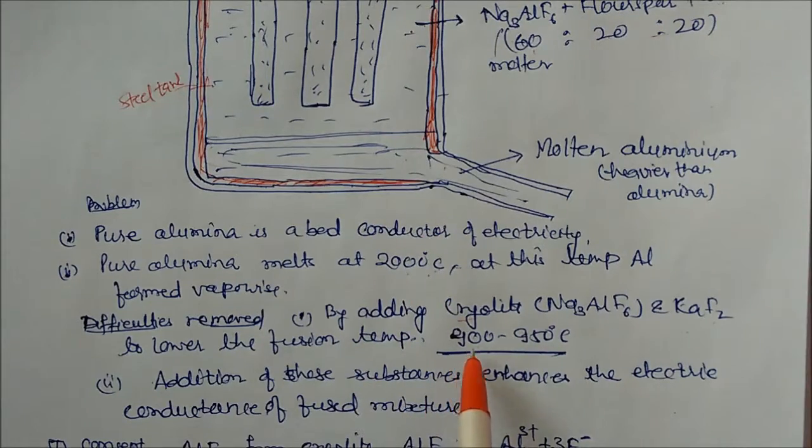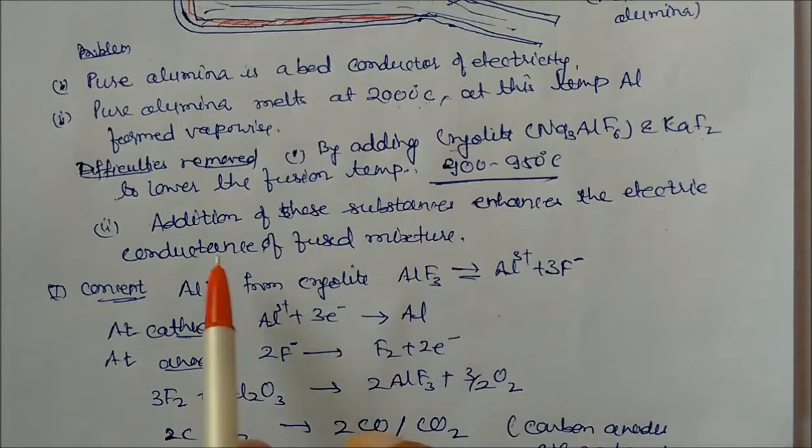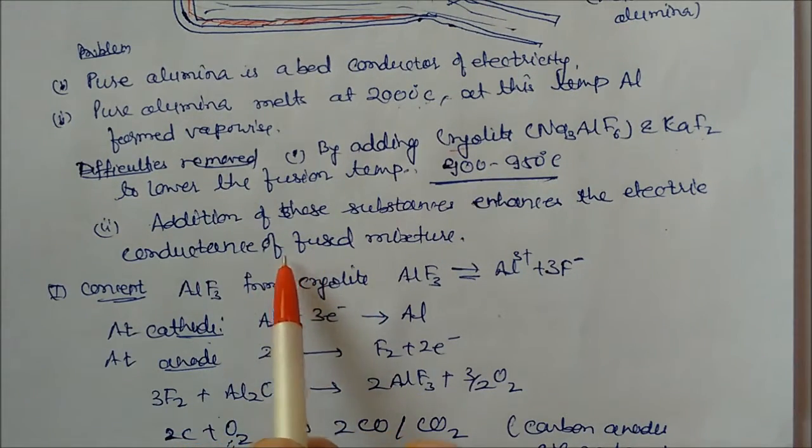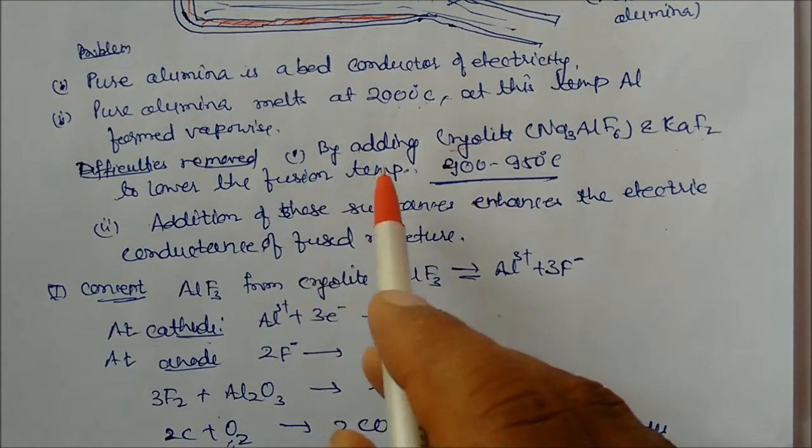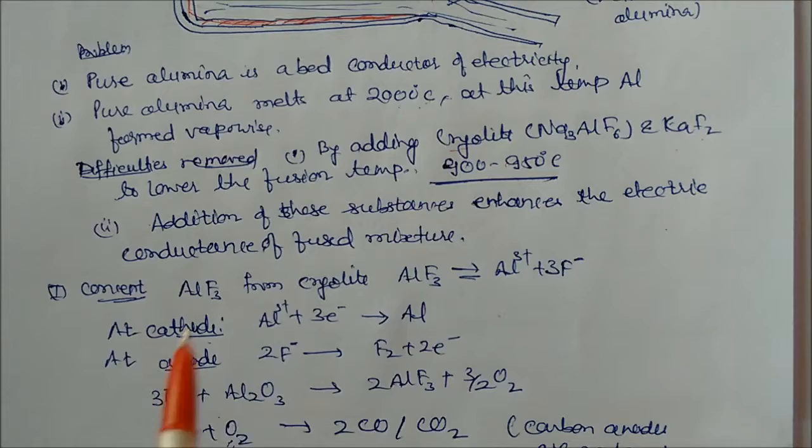Second advantage of cryolite is that if you add this substance, it will increase the electric conductivity of the fused mixture. So there are two advantages: one advantage it will decrease the fusion temperature; second advantage of adding cryolite is to increase the conductance.